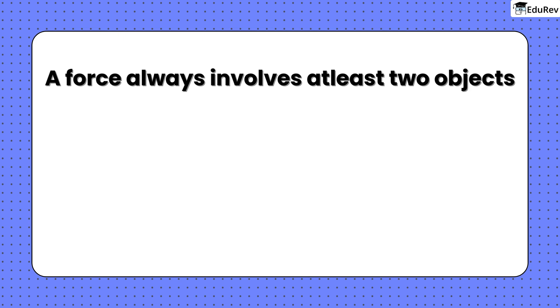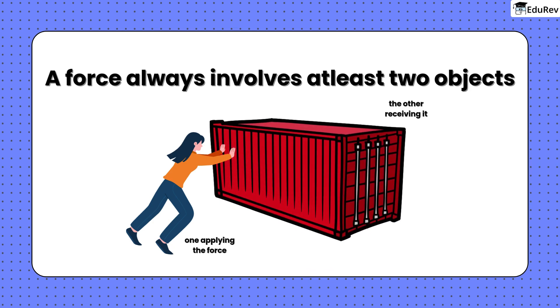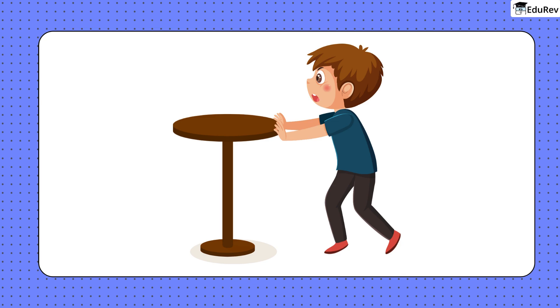A force always involves at least two objects, one applying the force and the other receiving it. For example, when you push a table, your hand exerts force on the table, and the table pushes back on your hand. You feel this resistance.